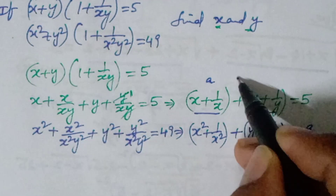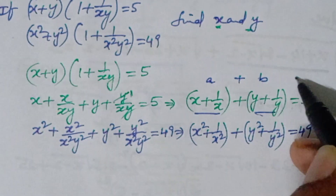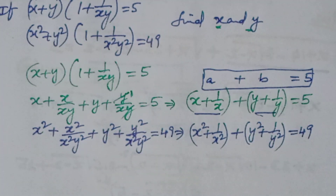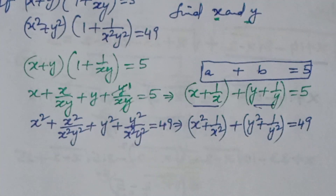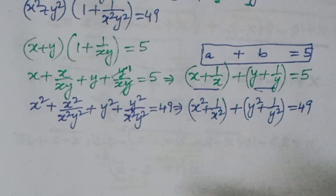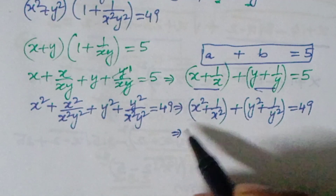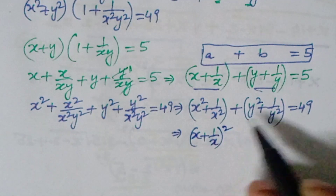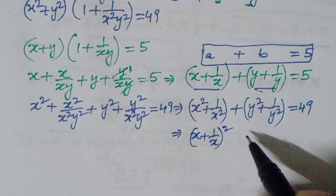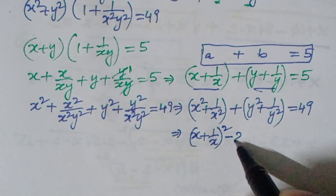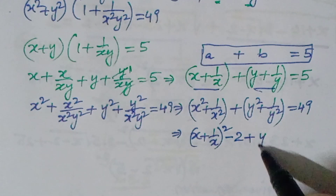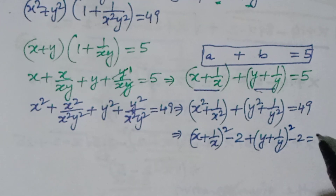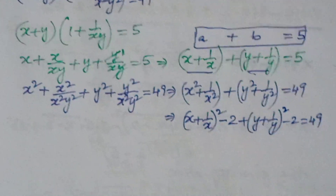Let us take a = x + 1/x and b = y + 1/y. So a + b = 5. Now, (x + 1/x)² = x² + 1/x² + 2, so x² + 1/x² = a² - 2. Similarly y² + 1/y² = b² - 2.